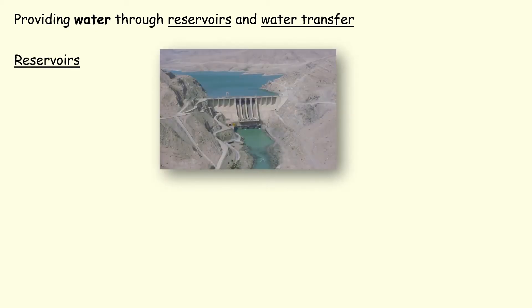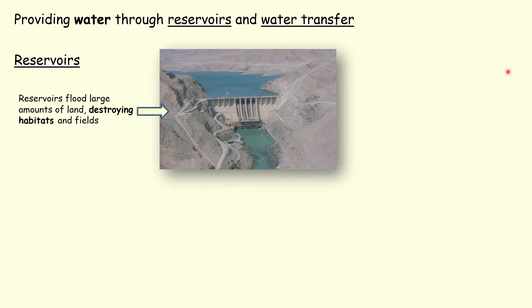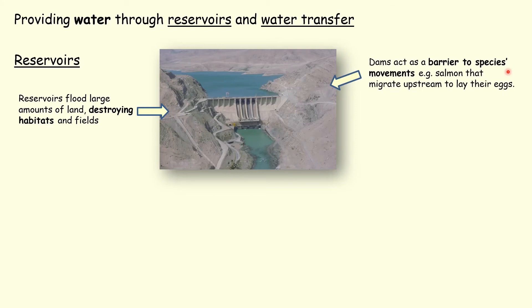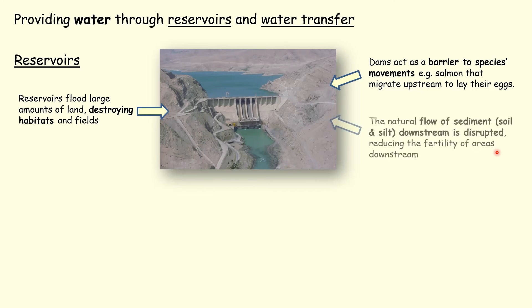Finally, we're going to look at providing water through reservoirs and water transfer. A reservoir is a large lake developed behind a concrete barrier — a dam — that stretches across a river. Problems with building reservoirs: large amounts of land have to be flooded to create them, which destroys habitats and fields, and sometimes people or local tribes living behind the dam have to move. Dams also act as a barrier to species movement — salmon famously migrate upstream to lay their eggs, and a big concrete barrier stops them from doing that. In certain places they've built salmon ladders, areas of water where the salmon can hop upstream, but it's not as good as having a natural river.